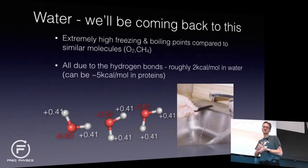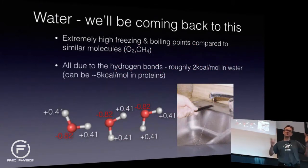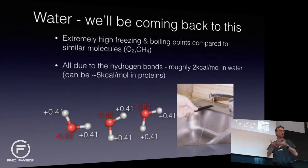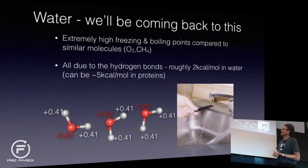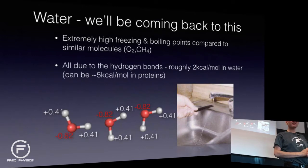It turns out that hydrogen bonds very much cause the properties of water — you have high freezing temperature, high boiling points. The energy of each hydrogen bond in water is roughly 2 kilocalories per mole; it can be slightly more in proteins. That's a number you should know, and we're going to come back and repeat it several times.